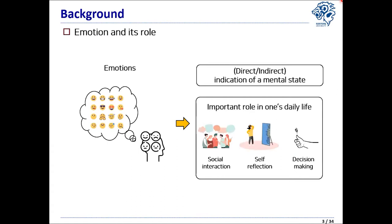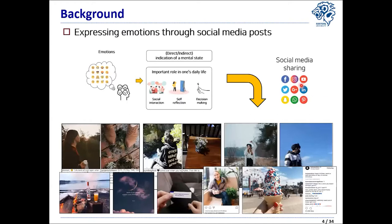Let me first present the background of this research. Emotion is one of the inherent characteristics of humans. It is either a direct or indirect indicator of mental state and plays an important role in one's life — for example, in social interaction, self-reflection, and decision-making. As more and more people are using social media, this online platform has become an important source for expressing and sharing emotions. There are many platforms like Instagram, TikTok, and Facebook used by many people, and a great amount of data embedded with emotions are generated online.